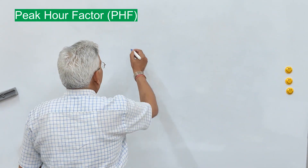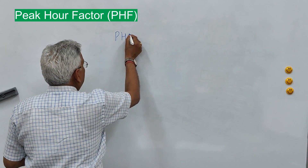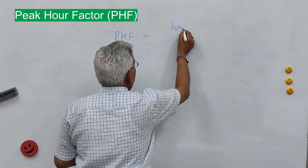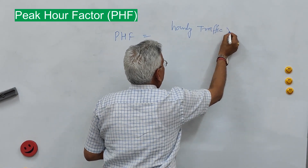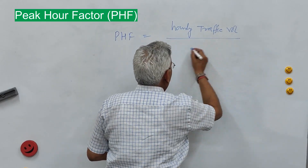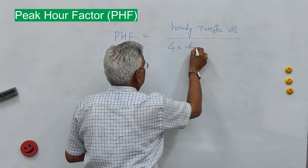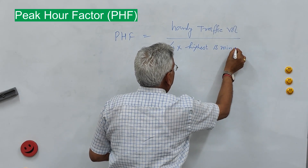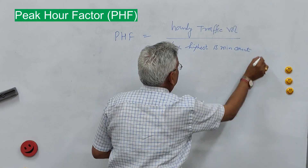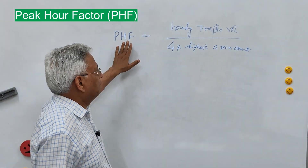Peak hour factor is given by dividing the hourly volume by the peak 15-minute flow rate within the analysis hour. The equation is: hourly traffic volume divided by 4 times the highest 15-minute count. That is the definition of peak hour factor.